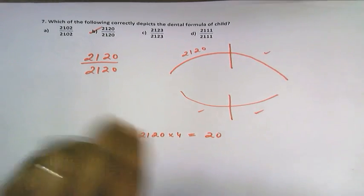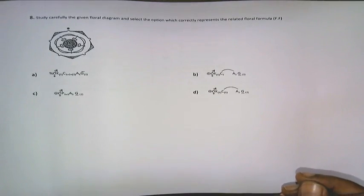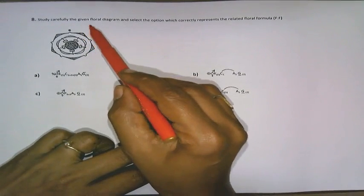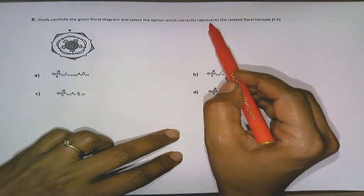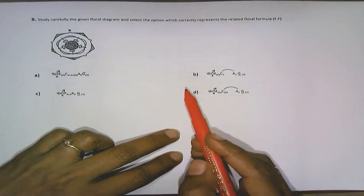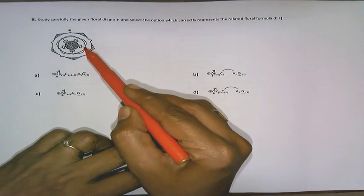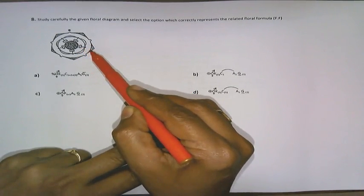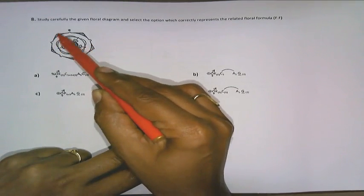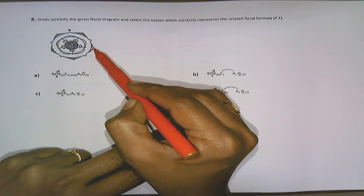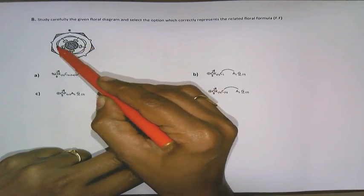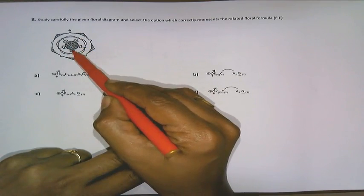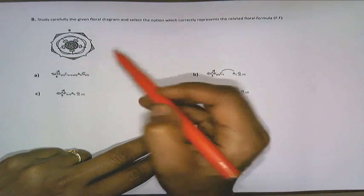Question number 8. Here, study carefully the given floral diagram and select the options which correctly represent the related formula. Let us see the floral formula. To understand the floral formula, let us see the floral diagram. As you observe here, this circle represents a calyx made up of sepals. The next whorl represents a corolla made up of petals, to which are attached the stamens, within which is a gynoecium.